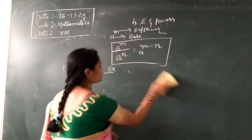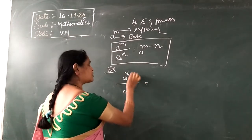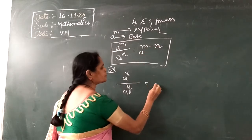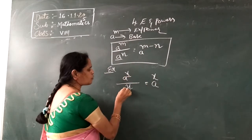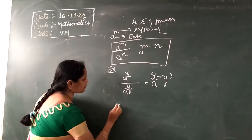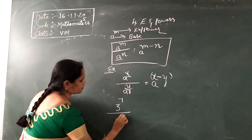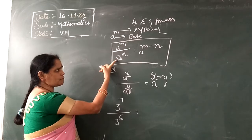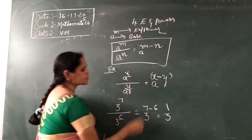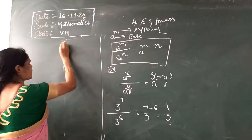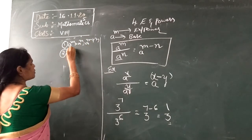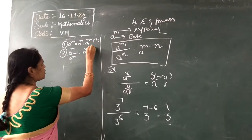Another example: A to the power of X by A to the power of Y equals A to the power of X minus Y. And numerically, three to the power of seven by three to the power of six equals three to the power of seven minus six, which is three to the power of one. So we have finished two formulas: A^M × A^N = A^(M+N), and A^M ÷ A^N = A^(M−N).